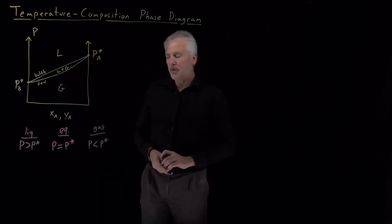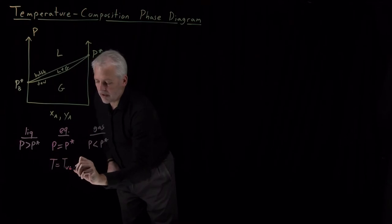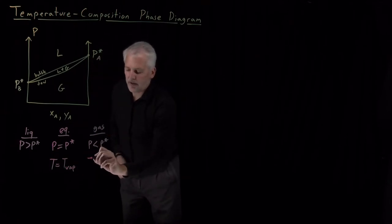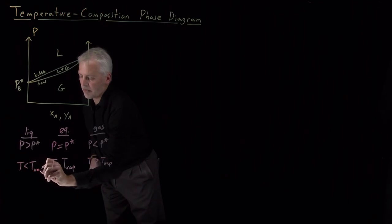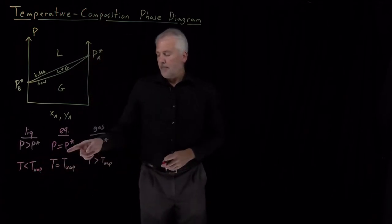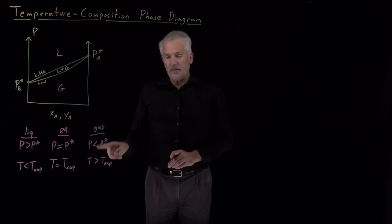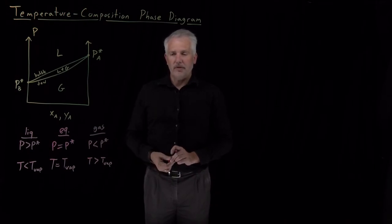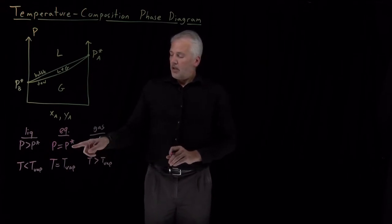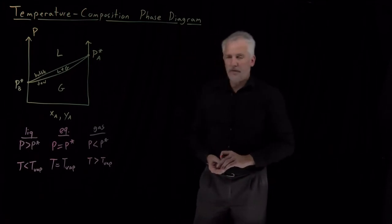Making those same statements about temperature: I have liquid and gas coexisting in equilibrium whenever the temperature equals the boiling point, the vaporization temperature. I have a gas whenever the temperature is greater than the vaporization temperature, and I have a liquid whenever the temperature is lower than the boiling point. Knowing the boiling point is equivalent in temperature terms to knowing the vapor pressure, but the signs of these two are different — a substance with a high vapor pressure will have a low boiling point. A volatile liquid with a high vapor pressure boils relatively easily at a low temperature.